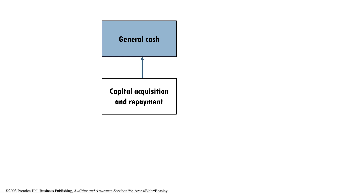The capital acquisition and repayment cycle is where we see the basic accounting equation in full action: assets equal liabilities plus equity. Whenever we need to raise cash, we need to either get it from internal sources — from equity — or from external sources coming from long-term debt. So this cycle represents how the business raises funds at the birth of the business, either from long-term debt or from equity.